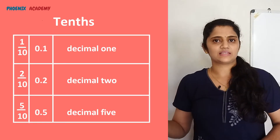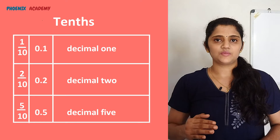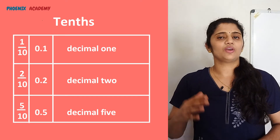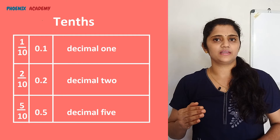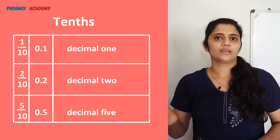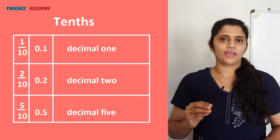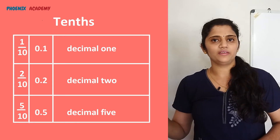Decimal fractions with 10 as a denominator are called tenths. To represent a fraction with 10 as a denominator as a decimal fraction, just put a dot to the left of the digits in the ones place of the numerator. These are some examples of tenths. Absence of digits to the left or right of the decimal point are represented with 0. For example, 5/10 we can write it as 0.5.